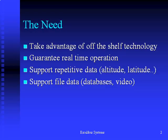AFDX replaces ARINC 429 and ARINC 629. ARINC 429 has point-to-point wiring which is heavy and trouble prone. ARINC 629 is complex and expensive. Ethernet is very cheap and very well proven, being constantly improved by the industry. Unfortunately, Ethernet is not real-time and often loses packets.